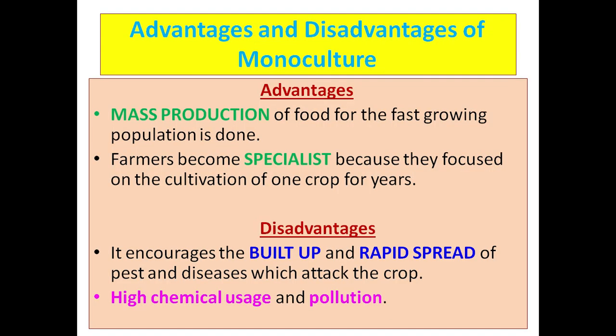The advantages of monoculture: number one, mass production of food for the fast-growing population is achieved; number two, farmers become specialists because they focus on the cultivation of one crop for years; and it is known where extra surplus can be sent to a factory for processing, which helps to solve food security issues.